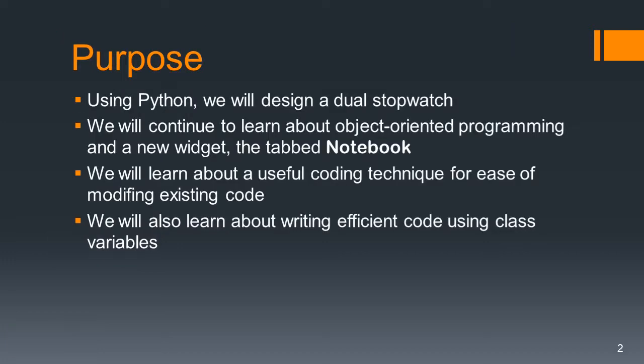Using Python we're going to design a dual stopwatch — two independent stopwatches sharing the same interface. We're going to continue to learn about object-oriented programming and we're going to learn about a new container widget called the tab notebook. We'll also learn about a useful coding technique called syntactic sugar, and something called class variables and how it helps us write efficient code.